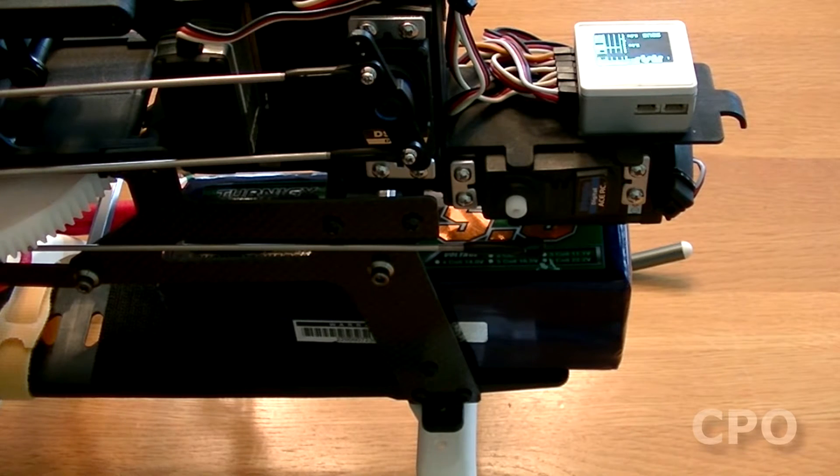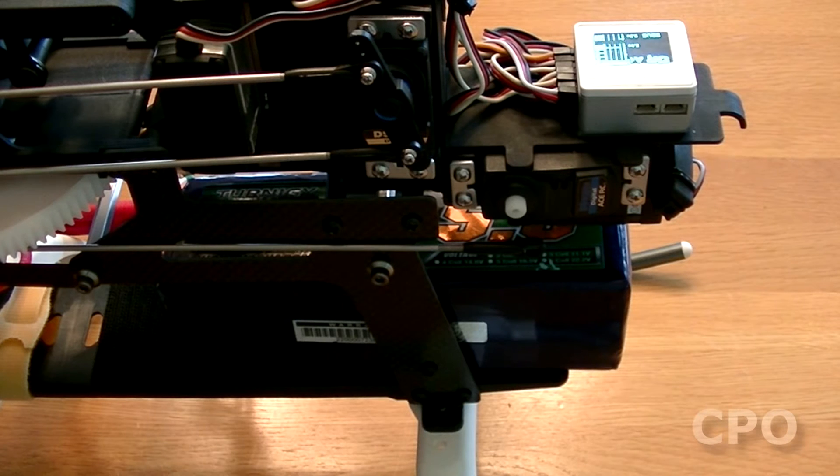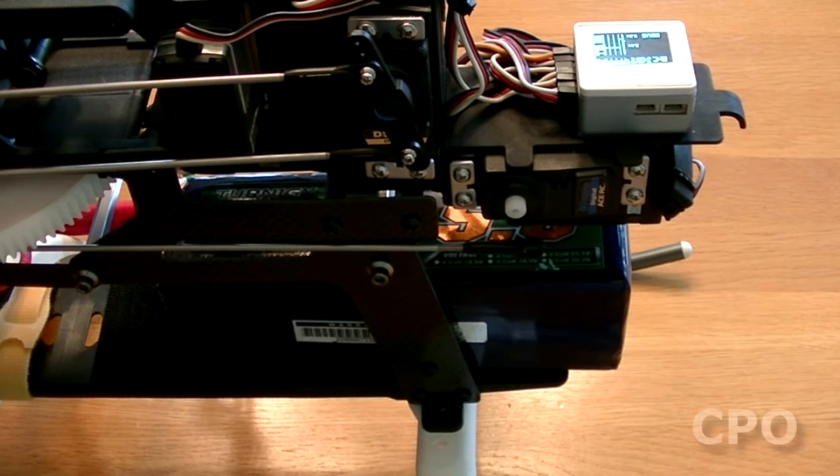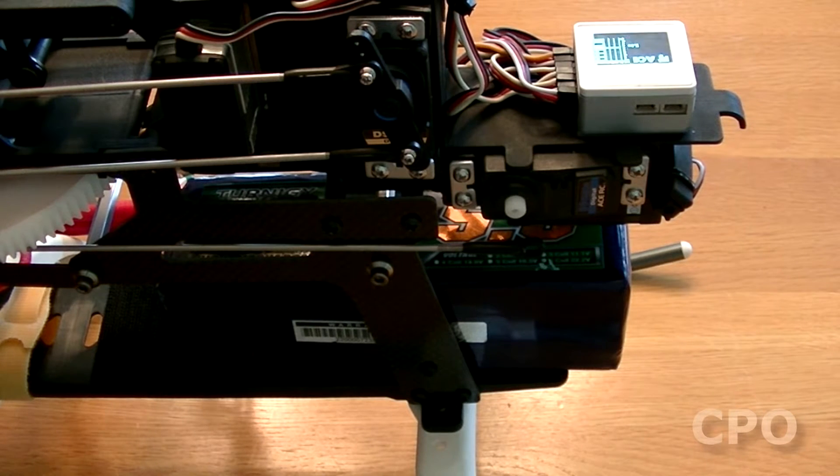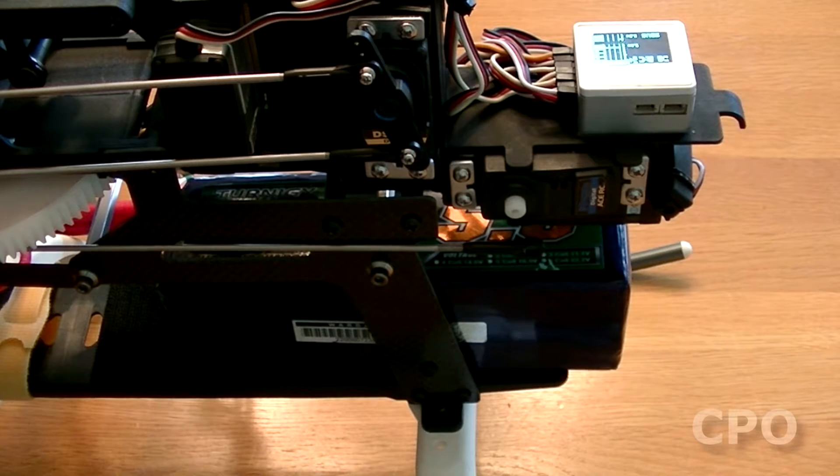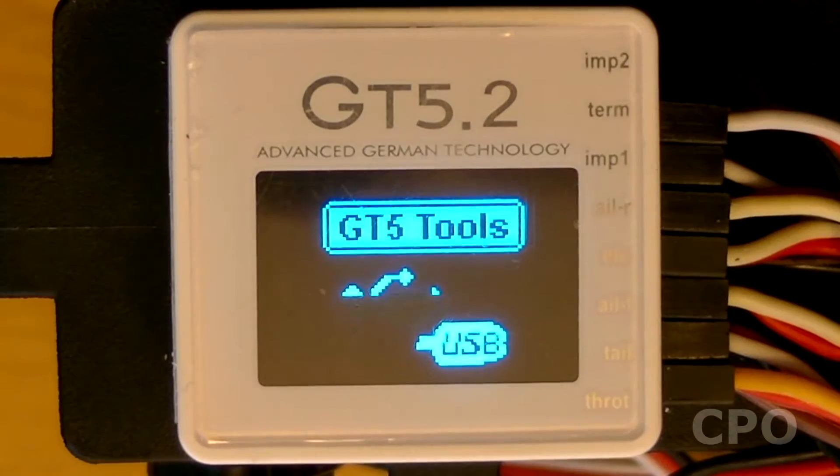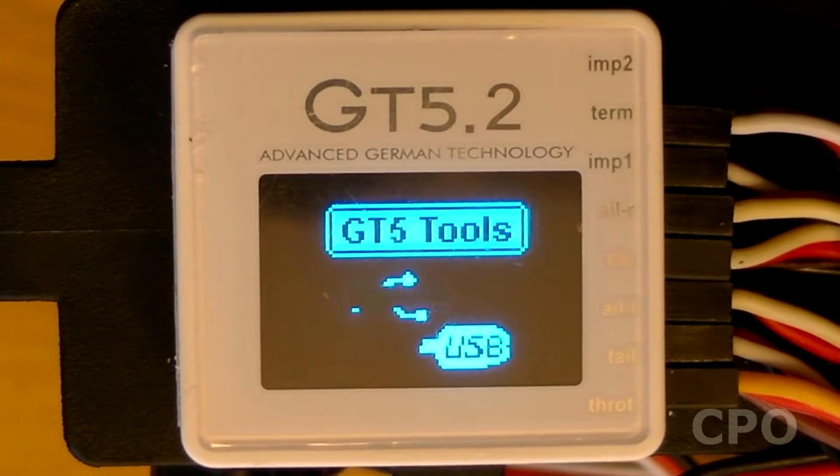The initial servo setup, getting the servo arm centered, is all fairly simple, but the challenge comes in when we start talking about what pitch setting we want to set our tail rotors to be, whether it's a neutral zero pitch, or as some people would call positive pitch, or negative pitch, or left-right, whatever. So I'm going to take a little bit of time to go over that, and hopefully when I get done, it will make some sense.